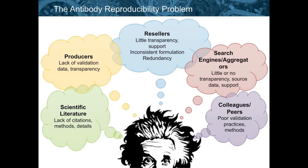Part of the problem with reproducibility is the way that we choose antibodies. There are a few different options when you're first looking for an antibody. You can go to the scientific literature and try to see how an antibody was used. You'll face two issues: first, you find the manuscript and the authors don't actually cite the antibody; or they say it was used in a previous paper, you find that paper, and they reference another paper, and so on. One of the problems with the scientific literature is that there are no citations, methods are incomplete, or there are no details about the antibody that was used.